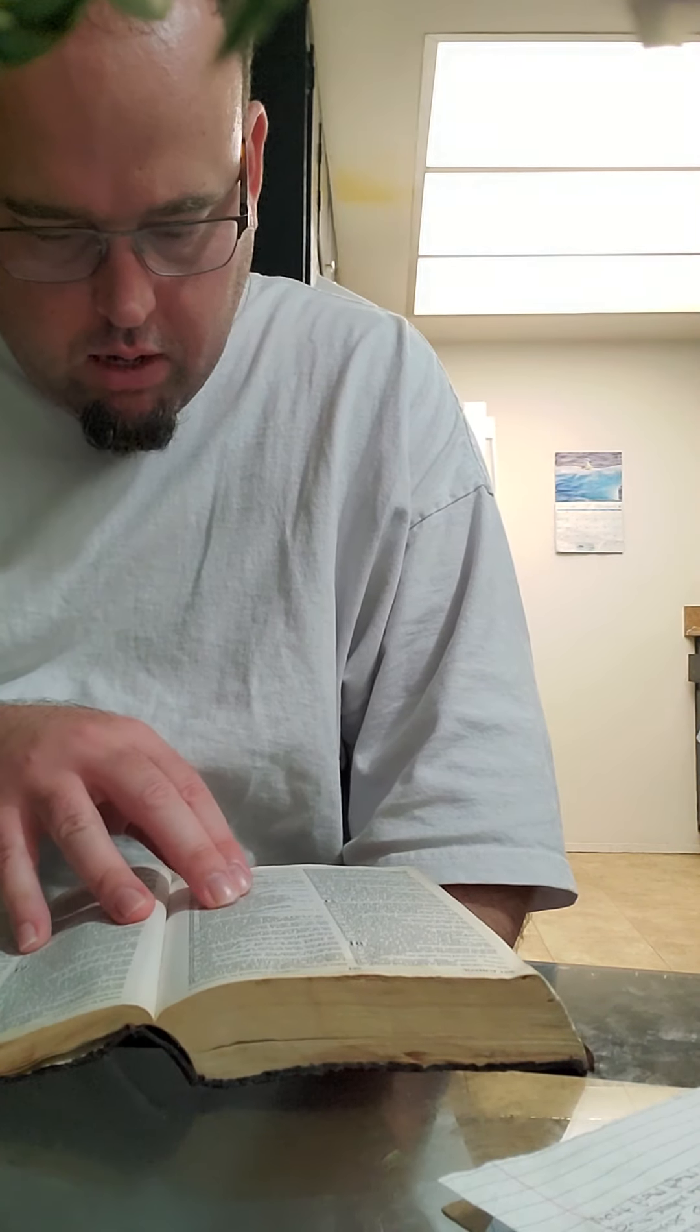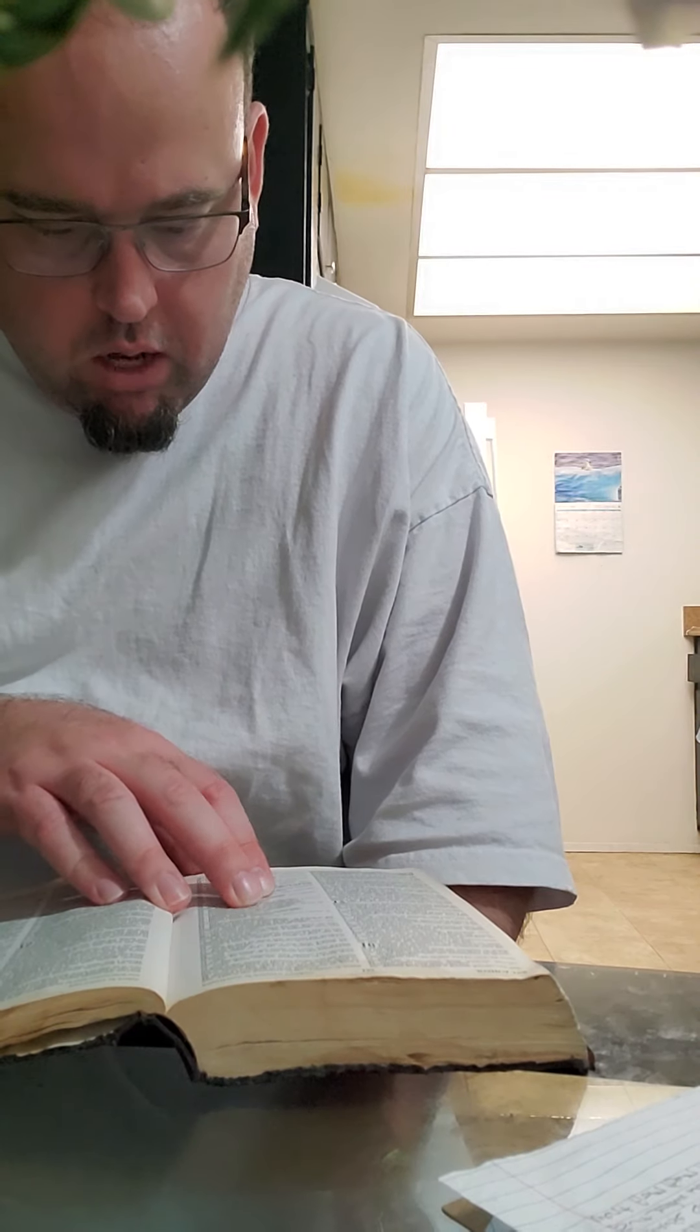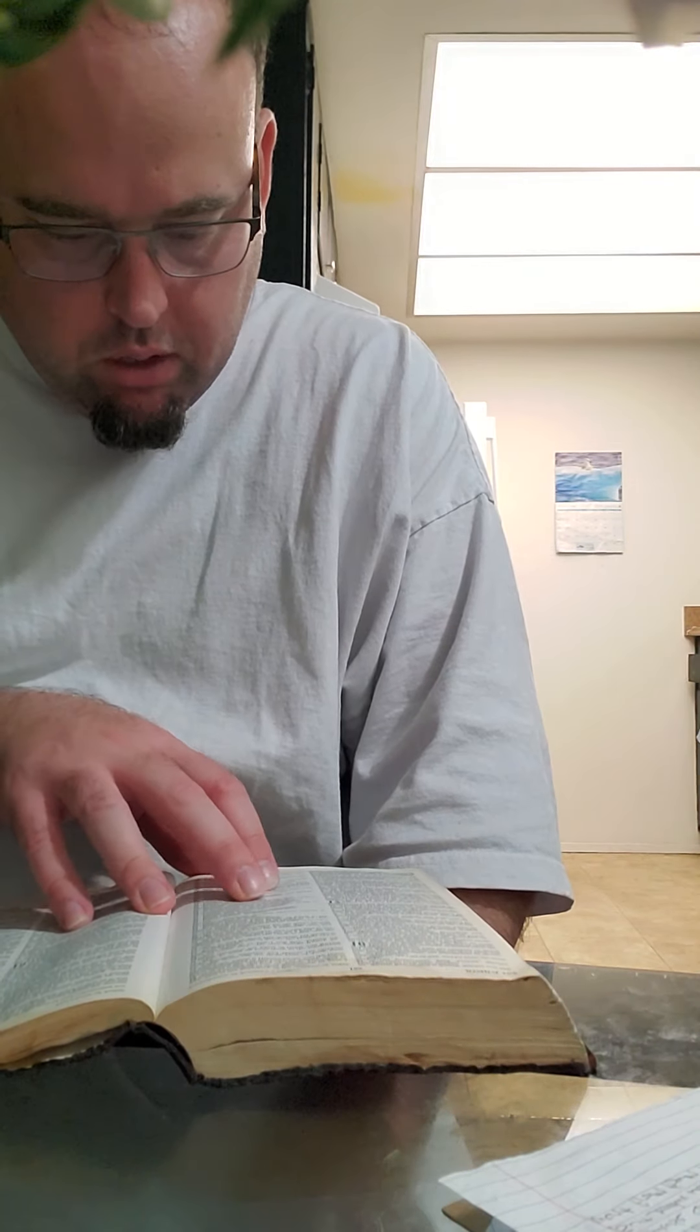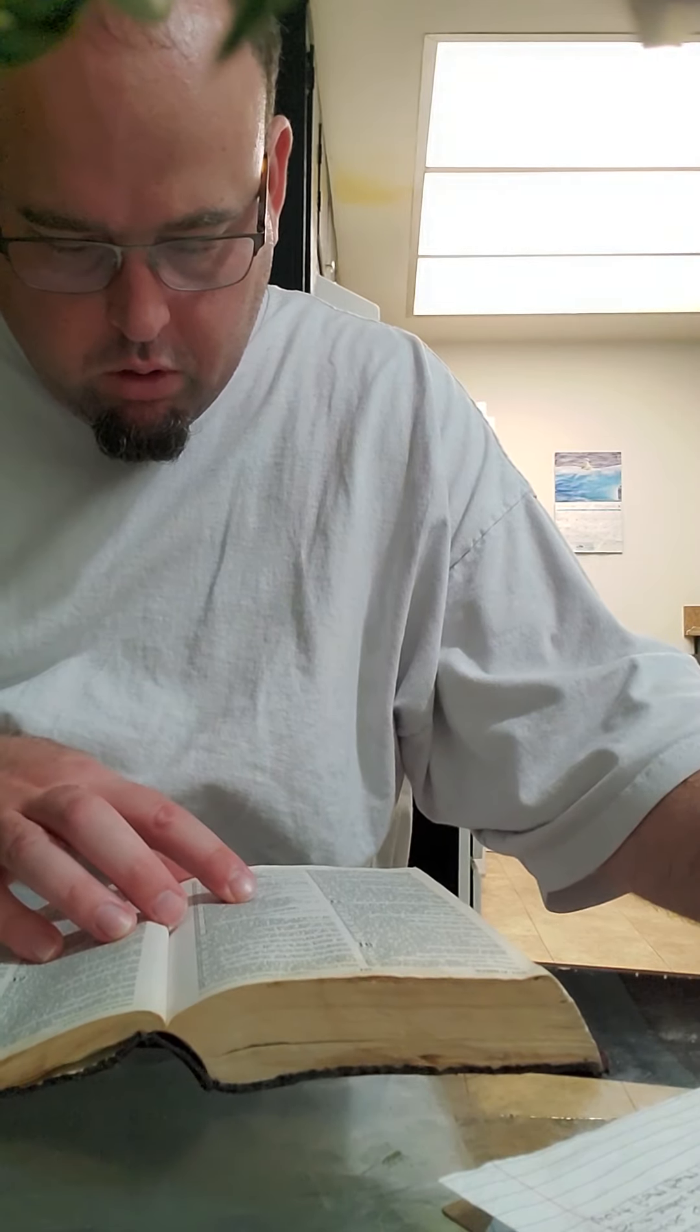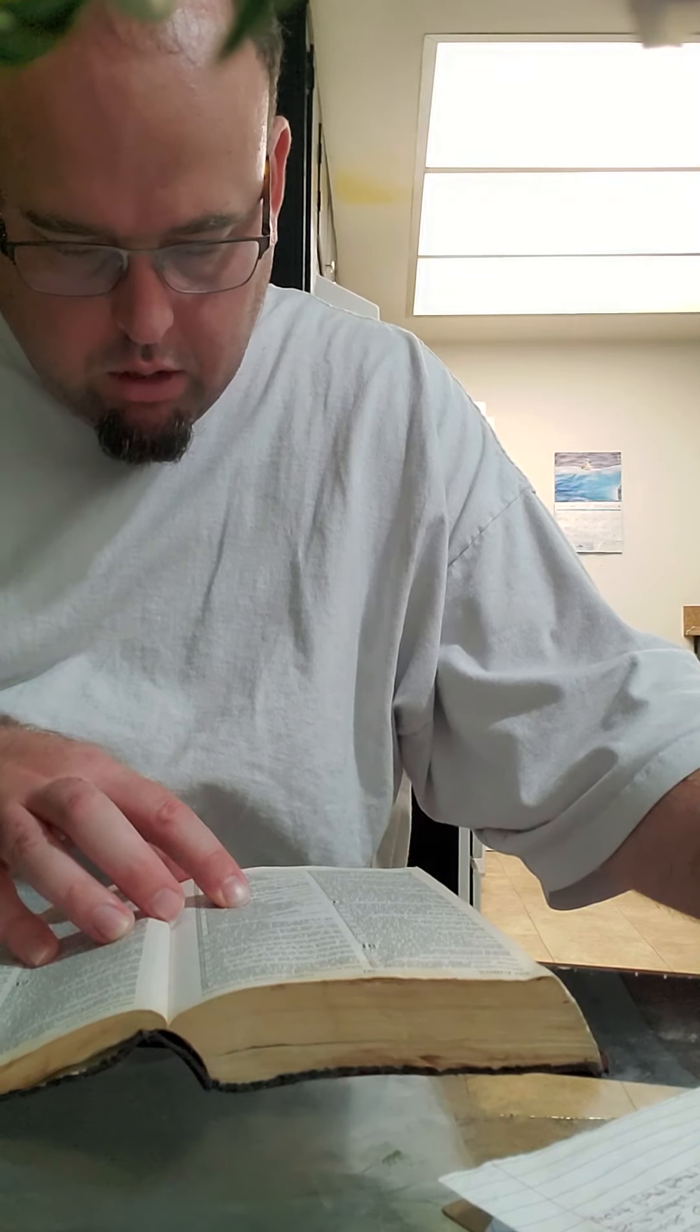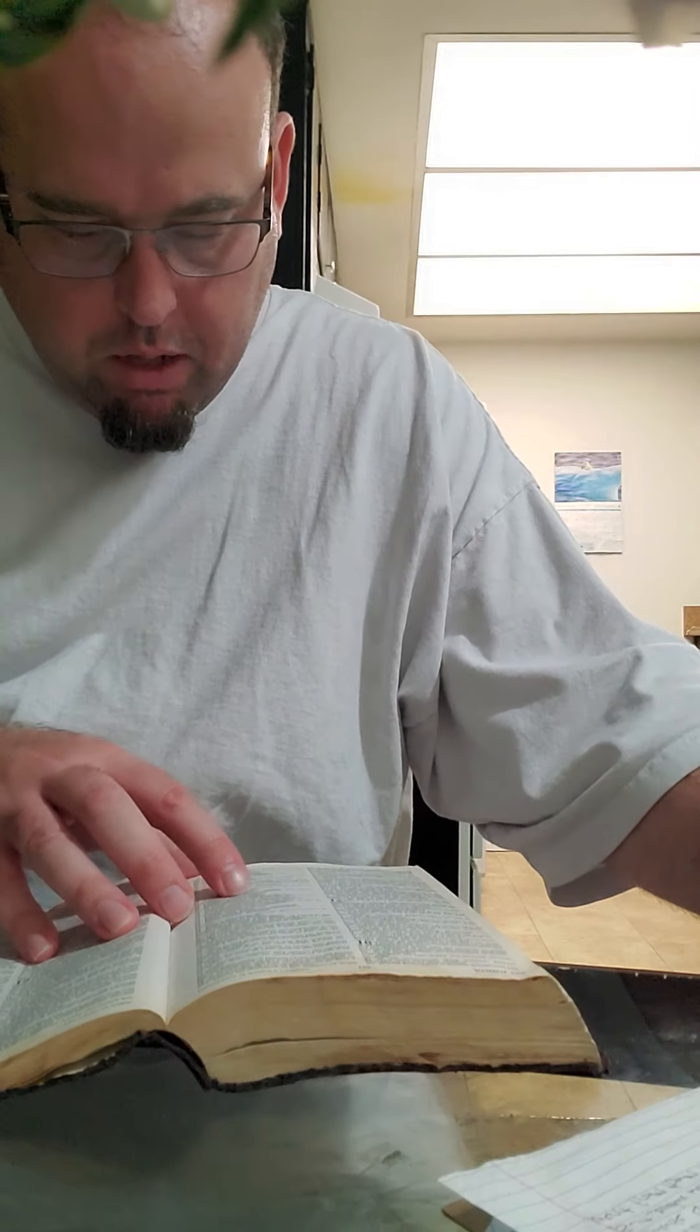In the lowland: Eshtaol, Zorah, Ashnah, Zanoah, En Gannim, Tappuah, Enam, Jarmuth, Adullam, Socoh, Azekah, Shaaraim, Adithaim, Gederah, and Gederothaim, 14 cities with their villages. Zenan, Hadashah, Migdal Gad, Dilean, Mizpah, Joktheel, Lachish, Bozkath, Eglon, Cabbon, Lahmas, Kithlish, Gederoth, Beth Dagon, Naamah, and Makkedah, 16 cities with their villages. Libnah, Ether, Ashan, Iphtah, Ashnah, Nezib, Keilah, Achzib, and Mareshah. Nine cities with their villages.